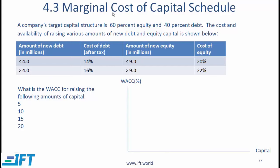Coming now to the marginal cost of capital schedule — I will explain this concept through an example. A company's capital target structure is 60% equity and 40% debt. The cost and availability of raising various amounts of new debt and equity capital is shown below.